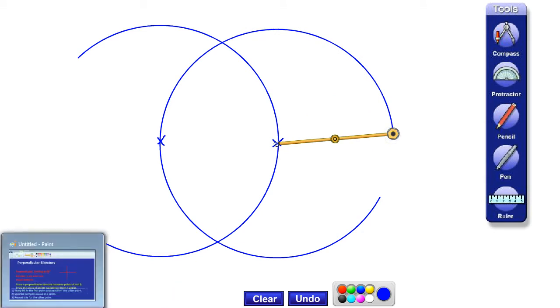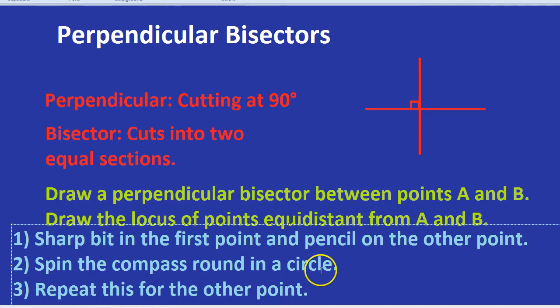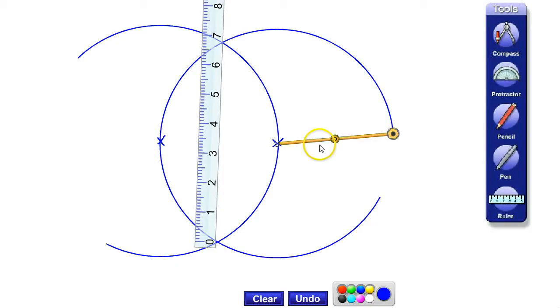Finally, you might be able to guess, but what you do is you get out a ruler and you simply join up the two points. Where it cuts over at the bottom and where it cuts at the top. I'll just put step four, join the points. Join where it crosses over. Join the crossings. And that's a perpendicular bisector.